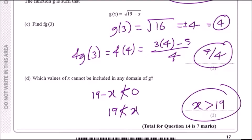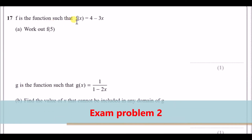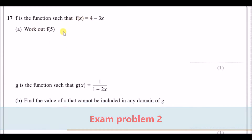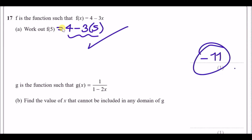f is the function such that f(x) = 4 − 3x. Work out f(5). You just replace x with 5, so the function at the point 5 is 4 − 3 × 5, which gives you −11. These kinds of marks are easy — just replace x with the value you're given.